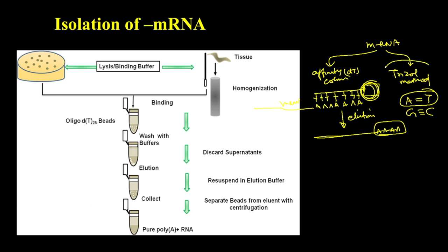The other method is the trizole method, which is used to isolate the messenger RNA from the cytosol.